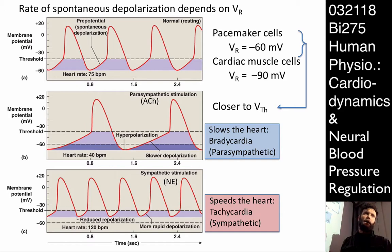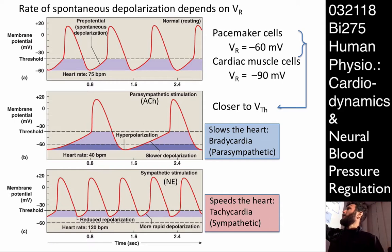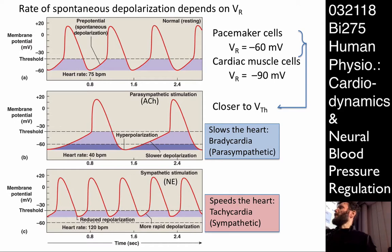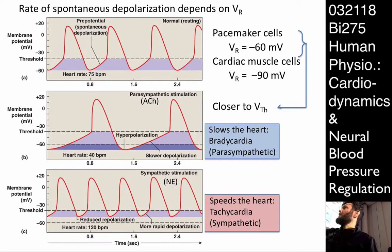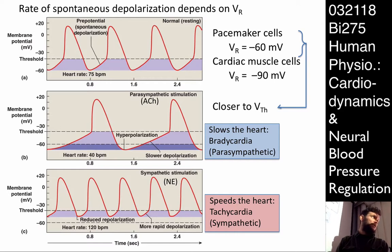The parasympathetic autonomics are not initiating or stopping the beating of the heart in any way. They are simply changing the membrane dynamics between beats. The spontaneous depolarization, which is inherent to the heart, is still completely active.